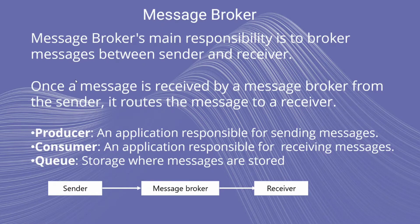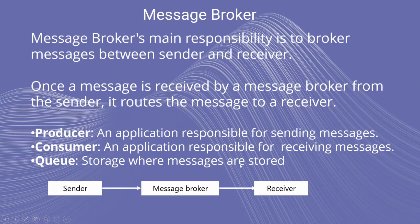A Message Broker's main responsibility is to broker messages between Sender and Receiver. Once a message is received by a Message Broker from the Sender, it routes the message to a Receiver. The Sender, we can also say Producer, is responsible for sending a message. The Receiver, we can also say Consumer, is responsible for receiving a message, and a Queue is a storage where messages are stored.